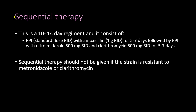The sequential therapy is a 10-to-14-day regimen. For the first five to seven days, the patient receives a proton pump inhibitor and amoxicillin. For the following five to seven days, they receive a proton pump inhibitor, a nitroimidazole (metronidazole or tinidazole), and clarithromycin twice a day. Sequential therapy should not be given if the strain is resistant to metronidazole or clarithromycin.